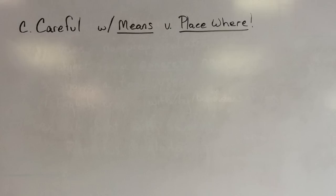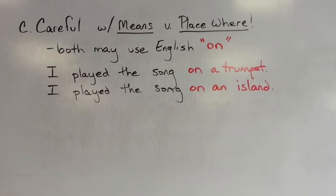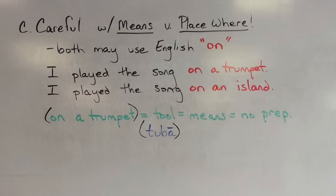We'll have to be careful here because the ablative of means can use the English preposition 'on,' just like the ablative of place where. We tell the difference based on whether something is being used to do something (ablative of means) or is a place where something is. For example, 'I played the song on a trumpet' — on a trumpet is a tool used, so that's ablative of means, we don't use a preposition. The word 'on' just disappears, and we use tuba in the ablative: tuba.